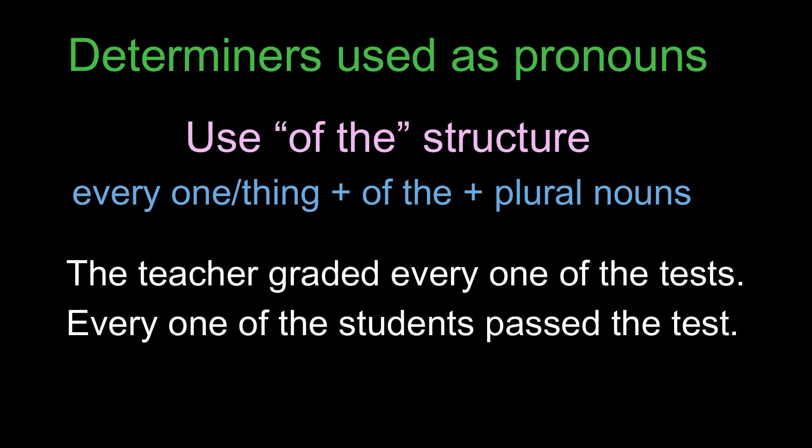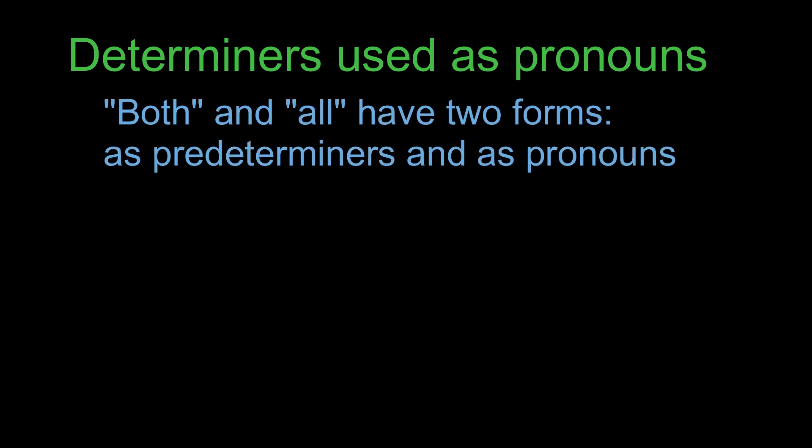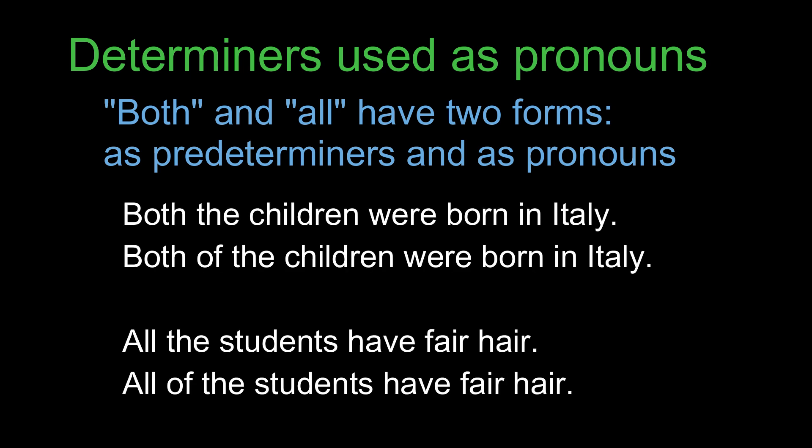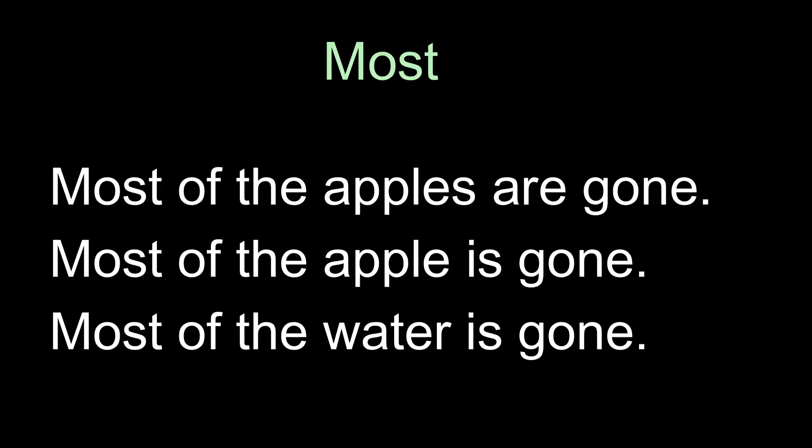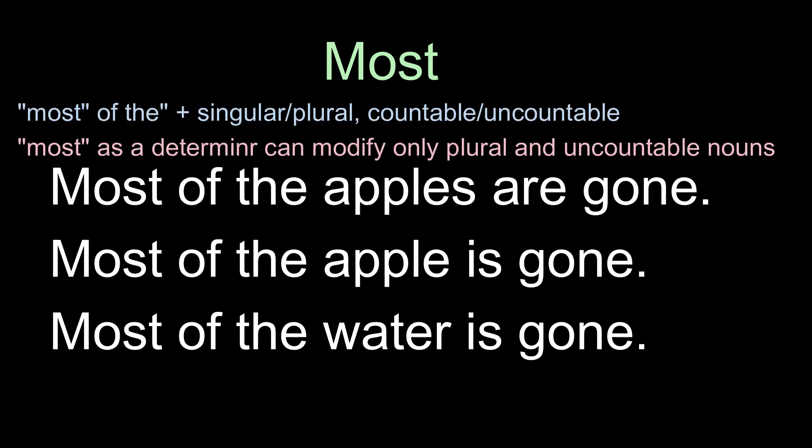Every one of the students passed the test. Since both 'both' and 'all' can be used as predeterminers and pronouns, they have two correct forms. For example: 'Both of the children were born in Italy' or 'Both the children were born in Italy.' 'All the students have fair hair' or 'All of the students have fair hair.' 'Most of the apples are gone,' 'Most of the apple is gone,' 'Most of the water is gone.'